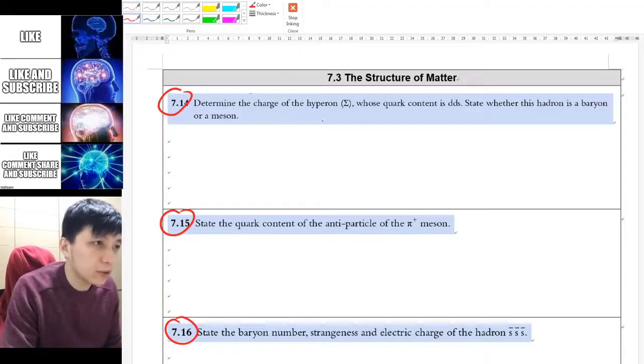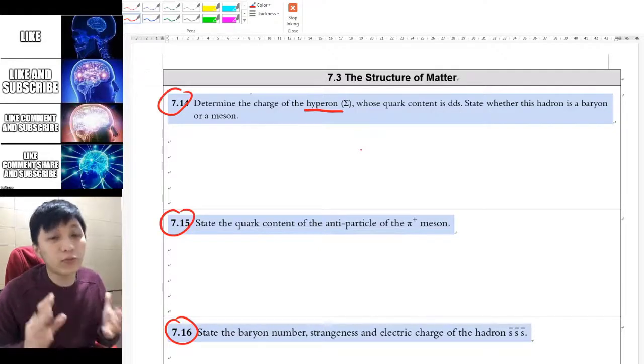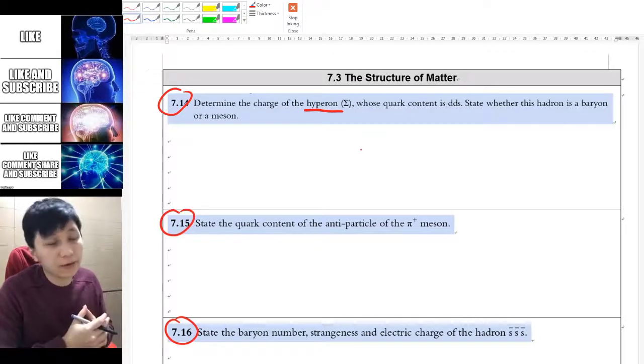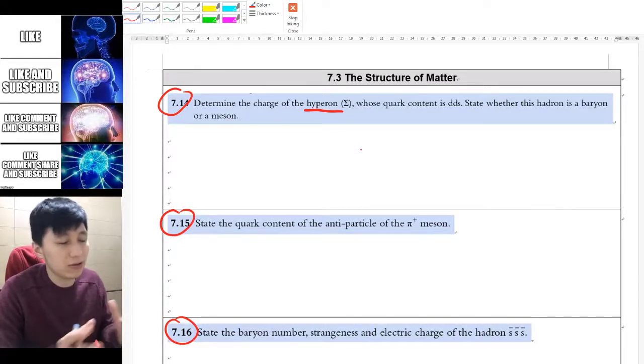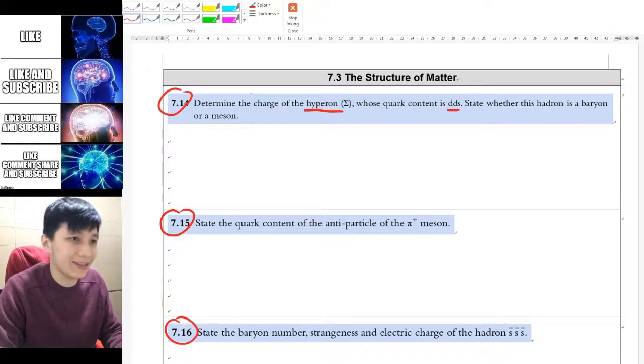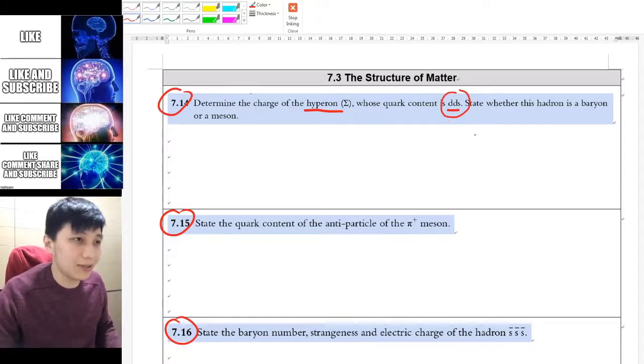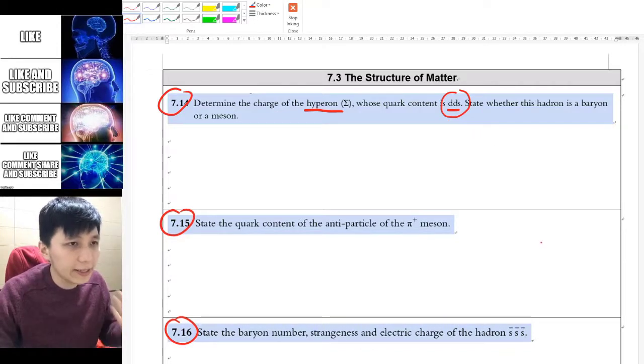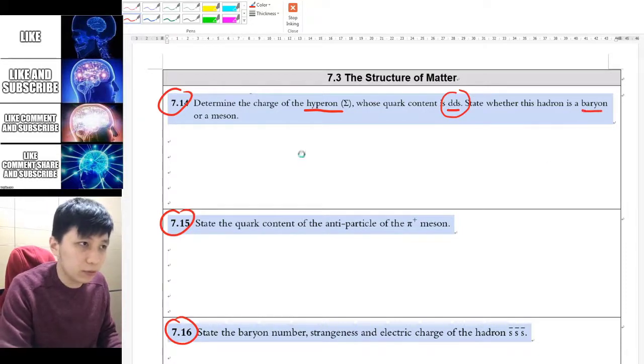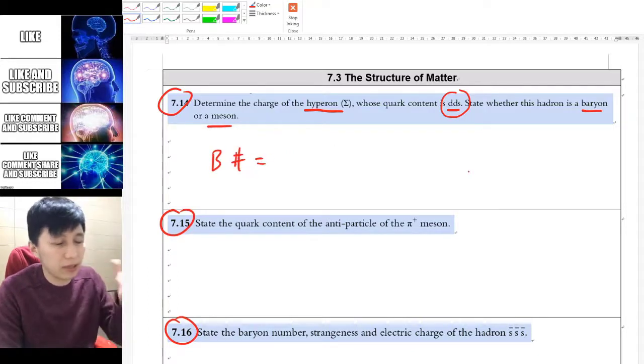For the first example you're given a certain particle called a hyperon. It doesn't really matter the name. In IB physics you're not expected to memorize any of these particles. They should always give you the quark content in the exam, so you don't have to memorize anything. You just have to know how to apply the data table. This is down, down, strange, and it asks whether this is a baryon or a meson.